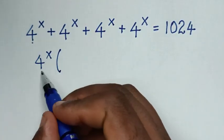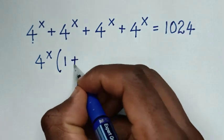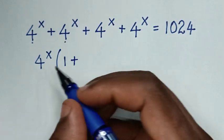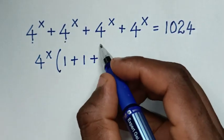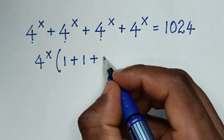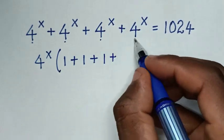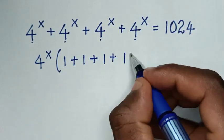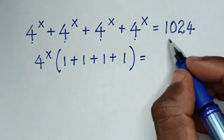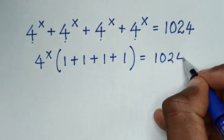Then 4^x divided by 4^x is 1, plus 4^x divided by 4^x is 1, plus 4^x divided by 4^x is 1, plus 4^x divided by 4^x is 1, in the bracket, which equals 1024.